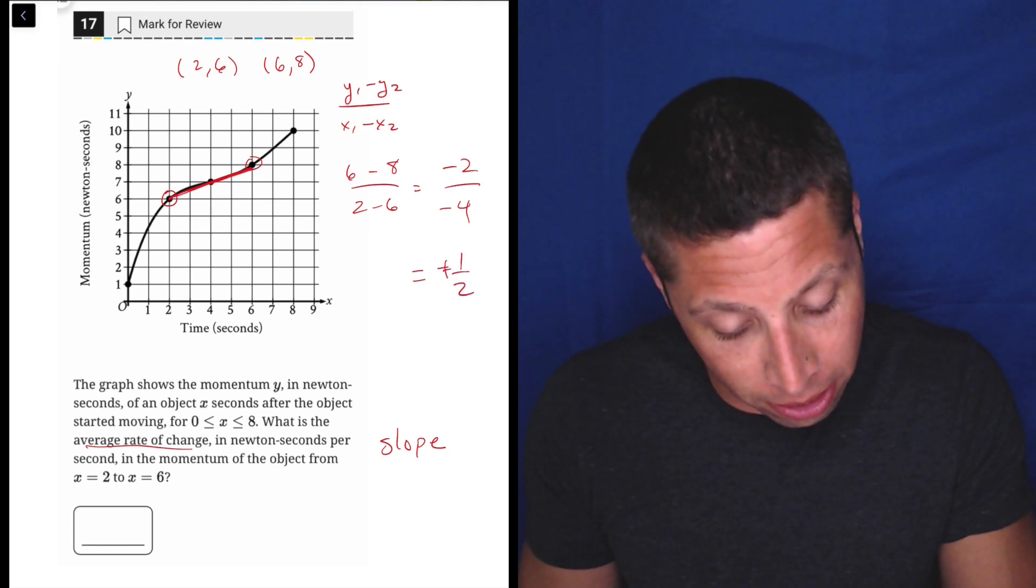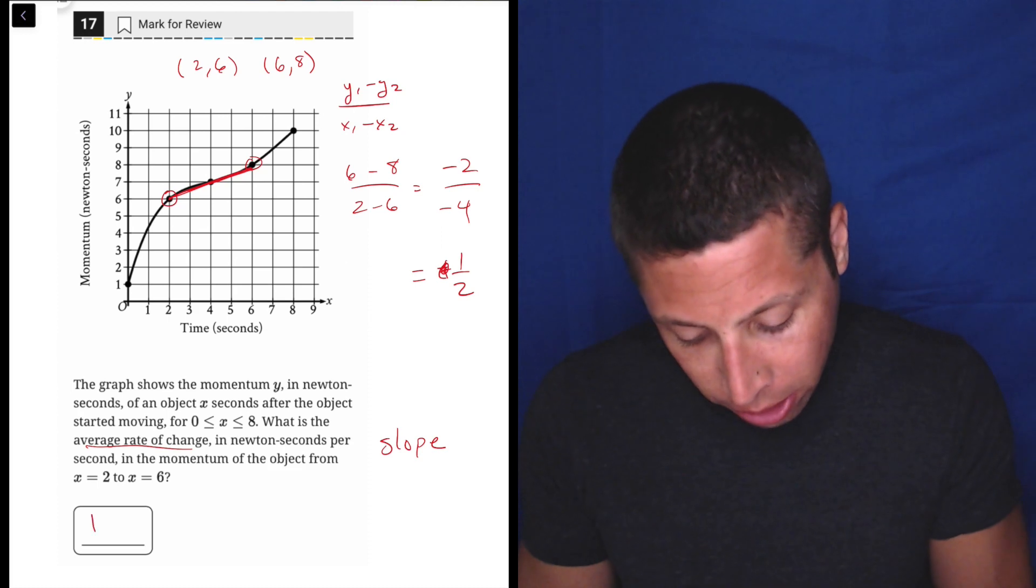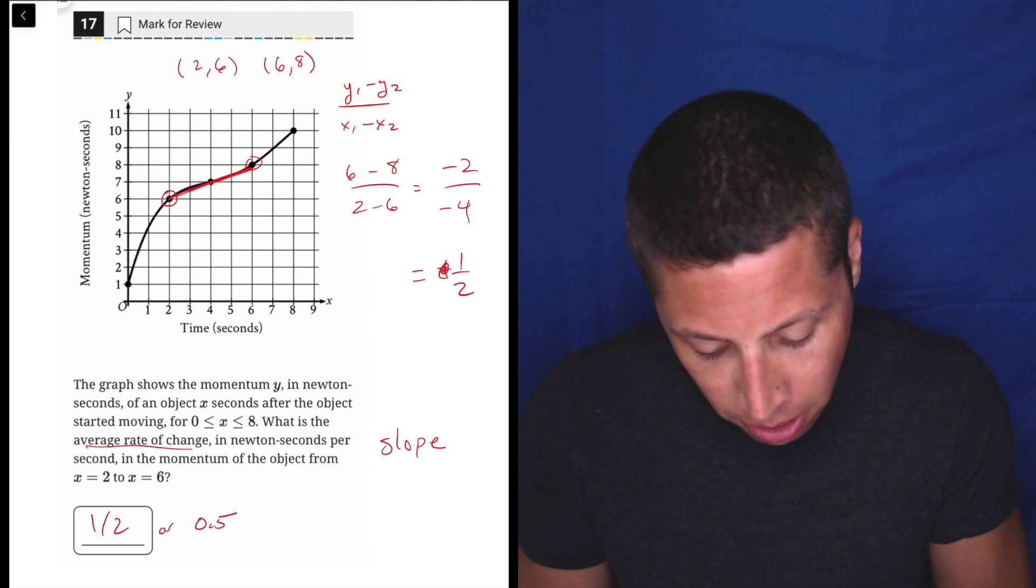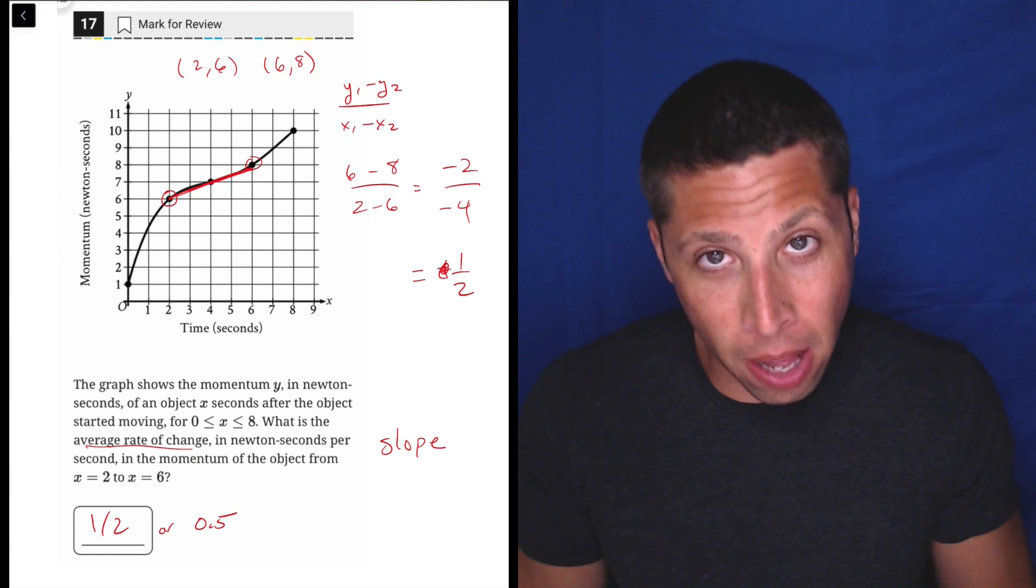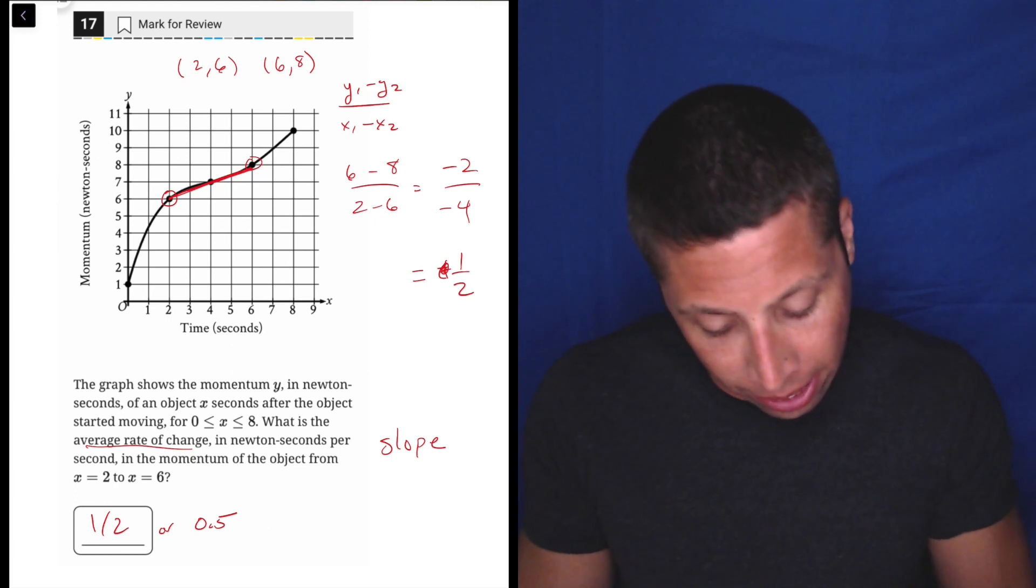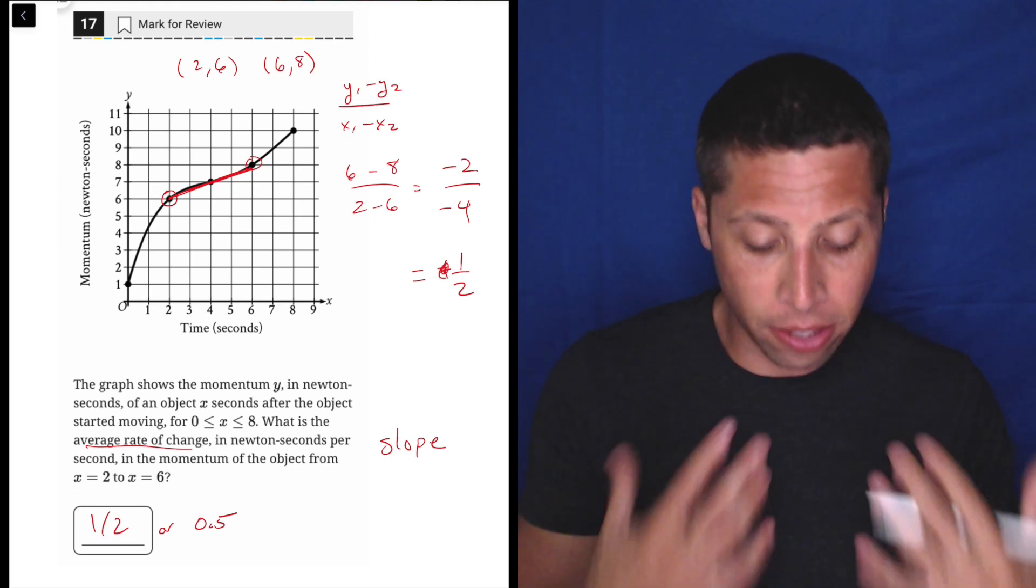That's negative 2 over negative 4, that is positive 1/2 because the two negatives make a positive. So you can bubble 1/2 or 0.5. I'll keep that almost-mistake in there - that's the actual answer.